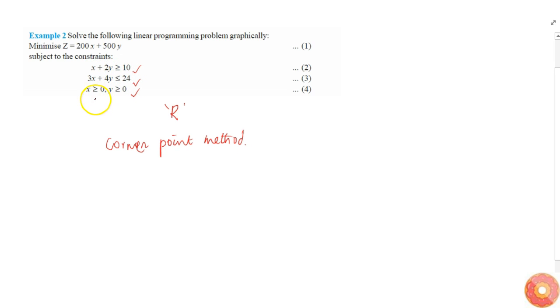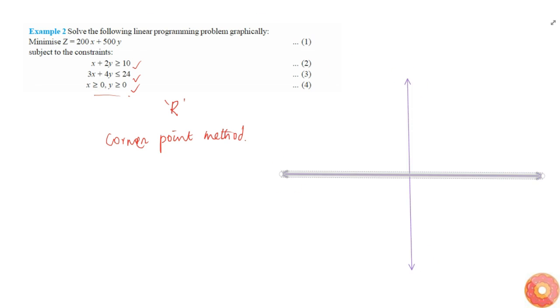So this is 3x plus 4y equal to 24, and this is x plus 2y equal to 10. These are the lines. We are asked to find the region x plus 2y greater than or equal to 10, so that's the region away from the origin.